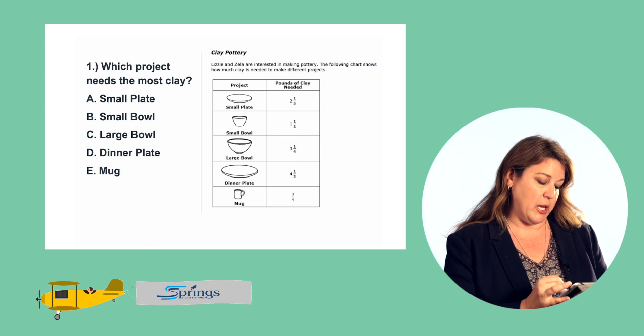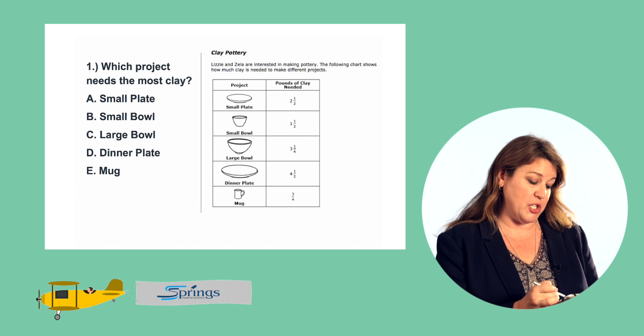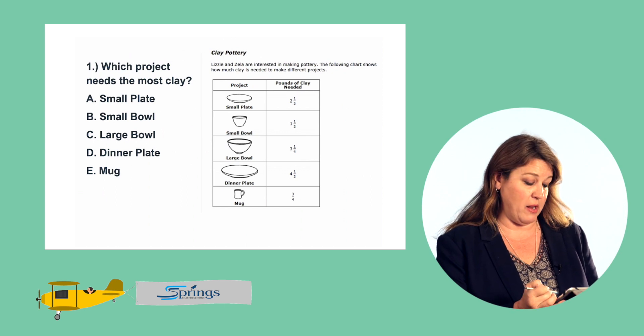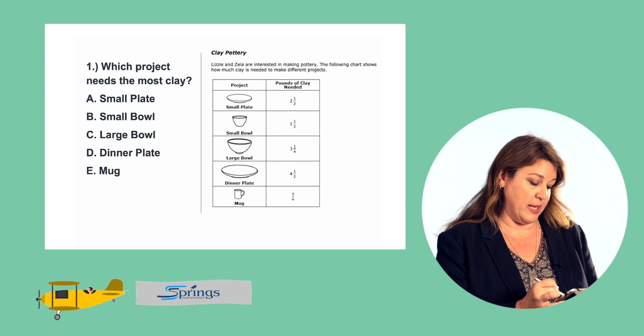Let's look at our chart. First, I can tell by looking at the whole numbers with the fractions which one's going to take the most amount of clay. Small plate is two and a half pounds of clay. Small bowl is only one and a half. So small plate takes more.